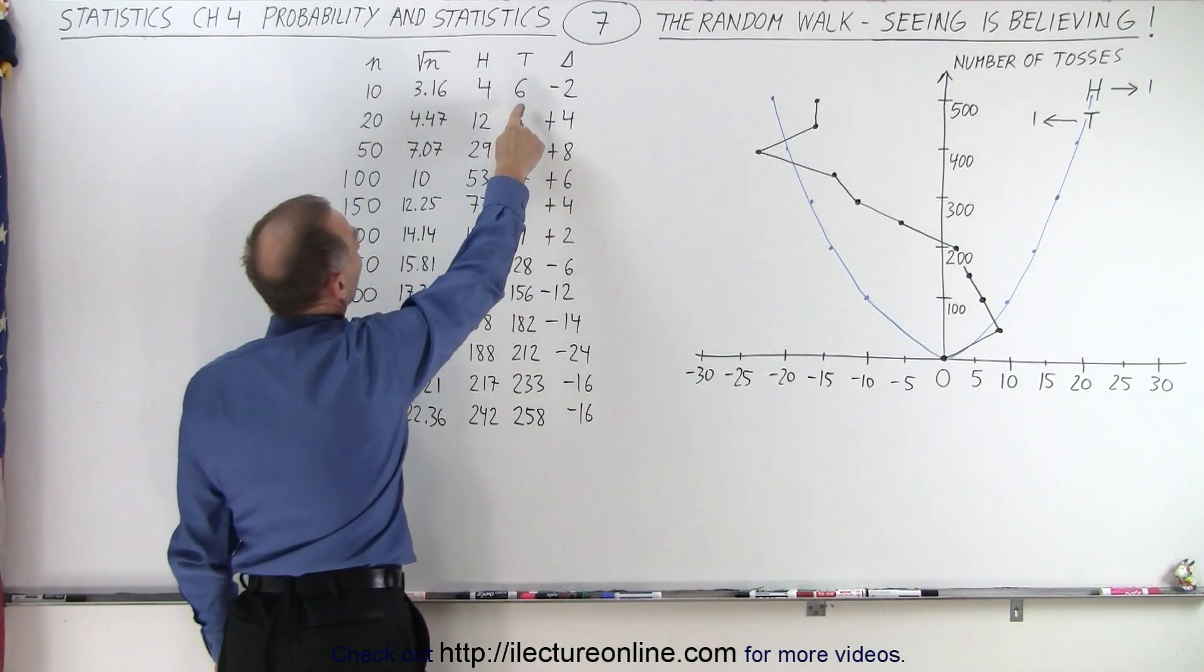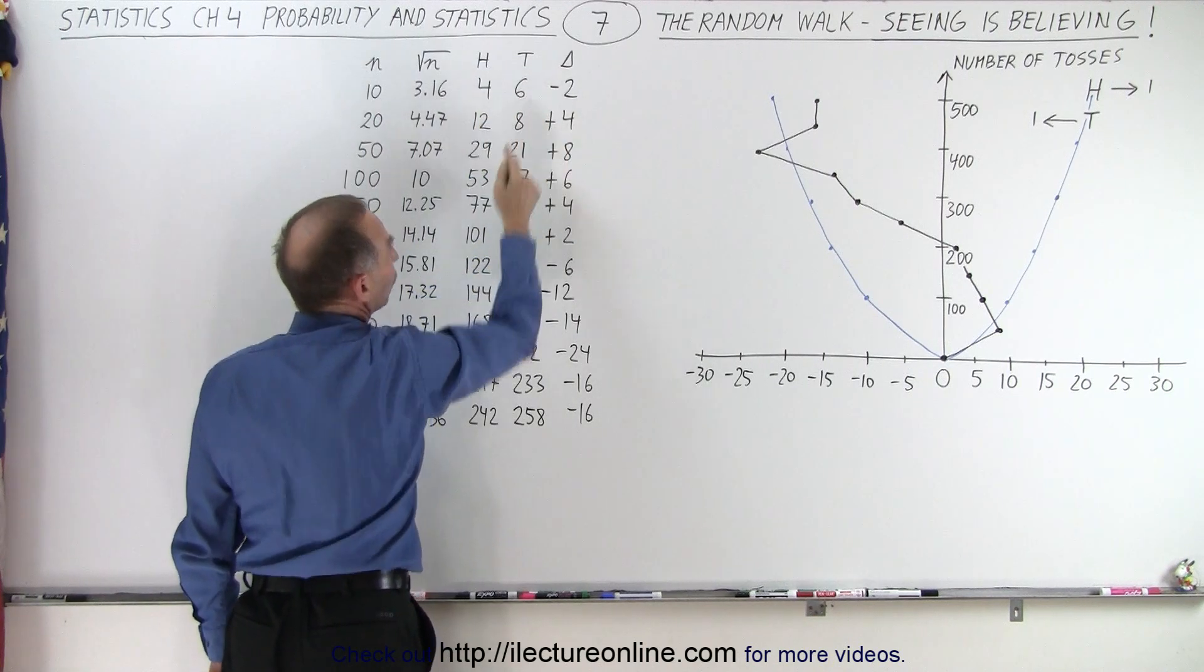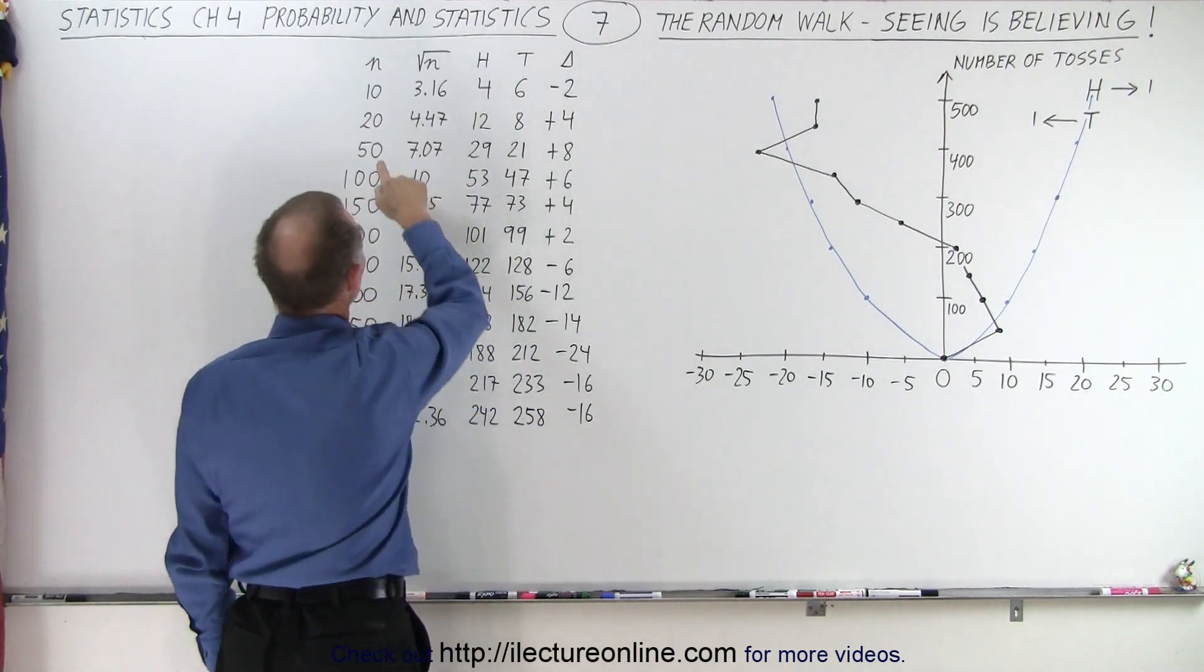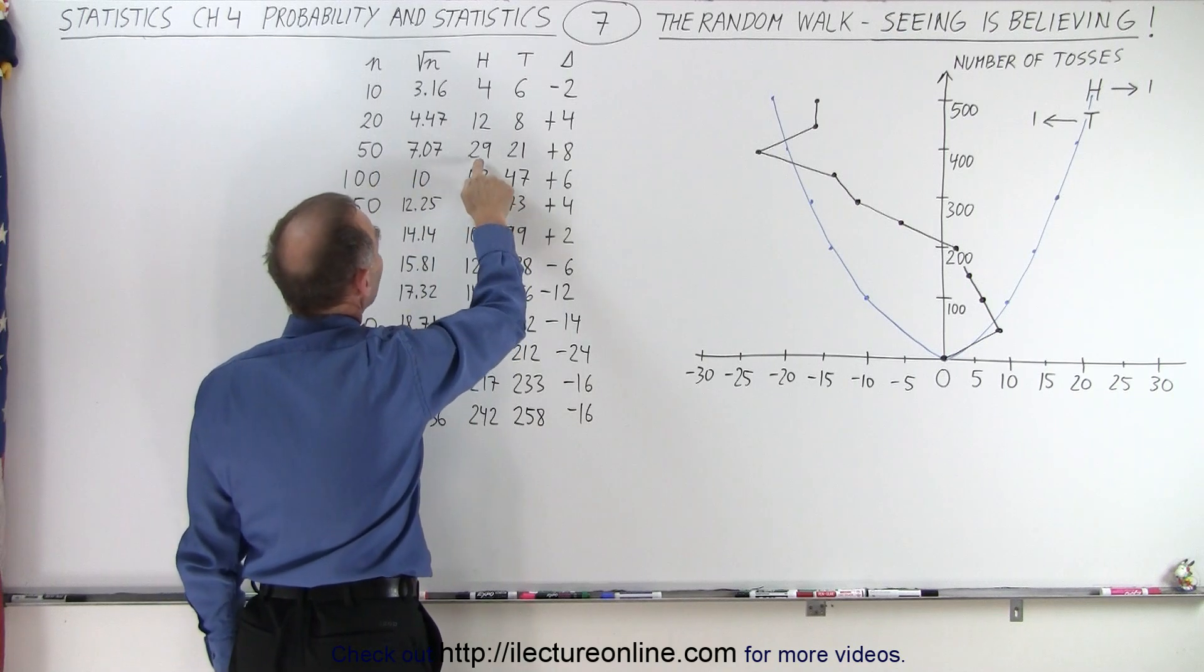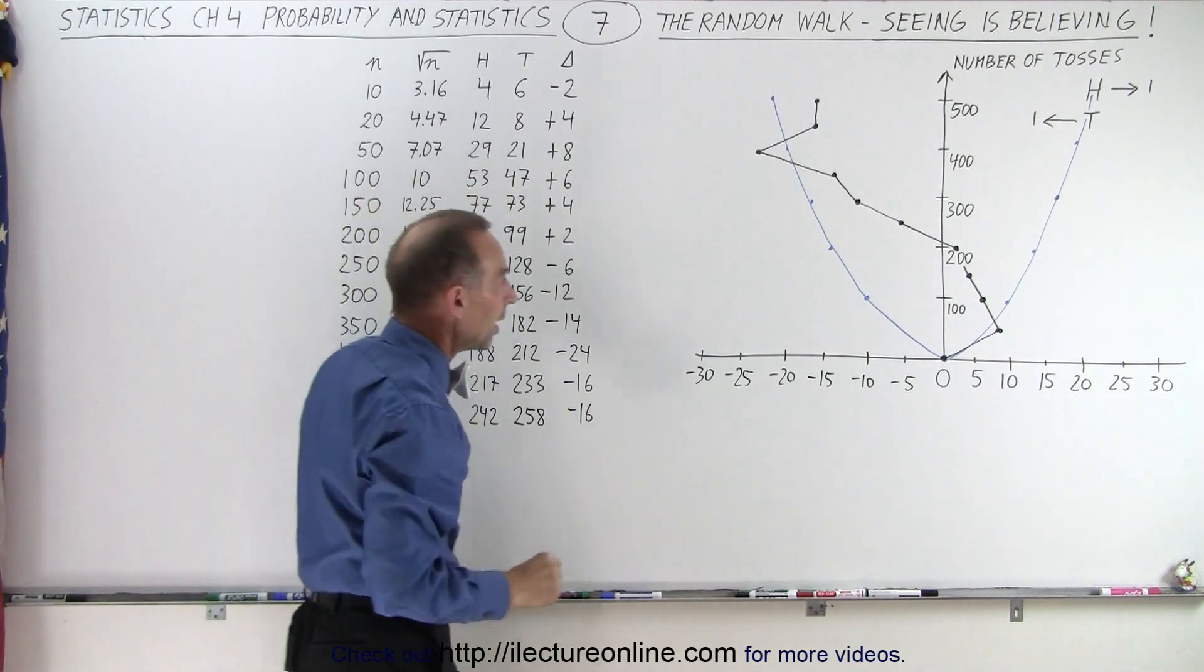After 10 I ended up with 6 tails and 4 heads, so I had 2 units to the left. After 50 tosses I had 29 heads and 21 tails, so I was 8 units to the right.